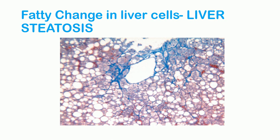Fatty change is seen especially in those cells involved in fatty metabolism — the liver cells and myocardial cells. This is the fatty change within the liver cell; the condition is called liver steatosis. As you can see, these are the intracytoplasmic vacuoles. The whitish hepatocytes have lipid deposits, and these lipids push the nucleus away from the center. The whole hepatocyte is filled with lipids, confirming these are intracytoplasmic vacuoles.